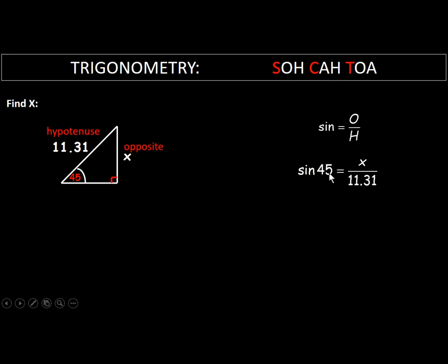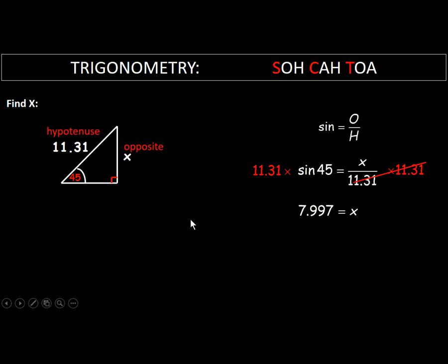Sine of 45 degrees equals X divided by 11.31. The sine of 45 is just another decimal — that's what we get when we divide opposite by hypotenuse in this triangle — and our calculator will handle it. We need to get X alone, so we multiply both sides by 11.31. You'll type 11.31 times the sine of 45 into your calculator — or Google or Desmos. If you do that, you should get 7.997, or something really close to 8. This is a basic trigonometry problem.